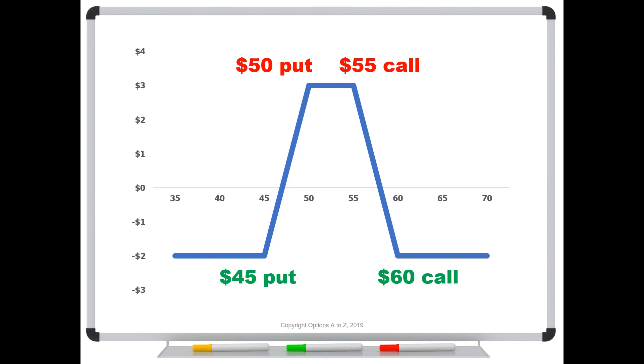So why might I use this? Well, notice I have an easy morph in both directions. If the stock turns to break out to the upside, all I have to do is maybe buy back this 55 call. And now I've got a bull spread on the left constructed with puts. It's a credit spread, but it's still a bull spread. And I've got this long 60 call.